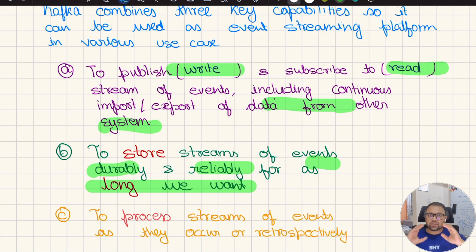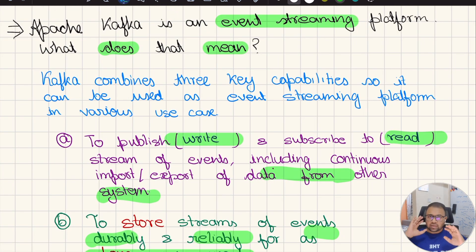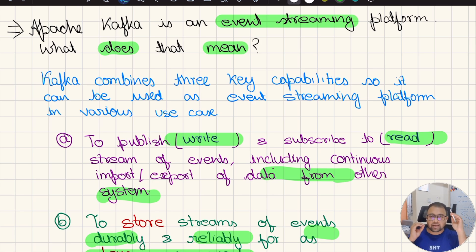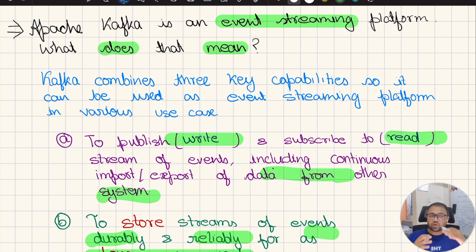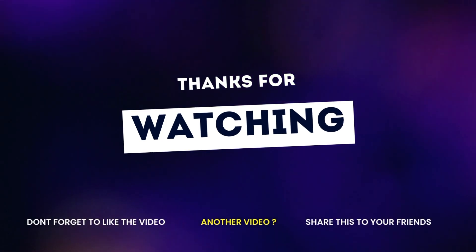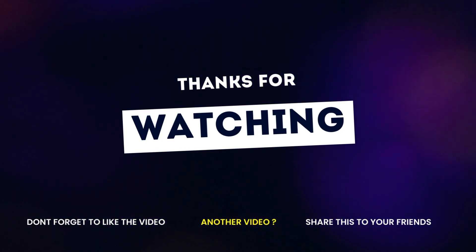I hope now you have got what Apache Kafka is in a brief way. We've understood what an event is in Apache Kafka and what event streaming is. Let's meet in the next video and try to go deeper with more examples and code for understanding these things.